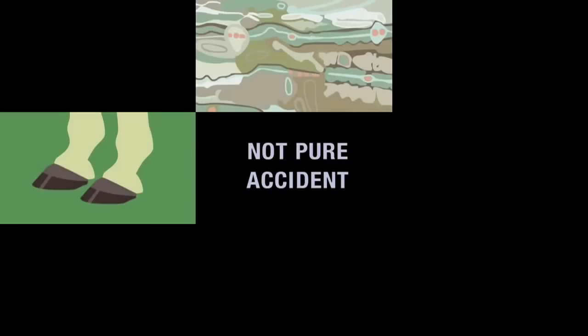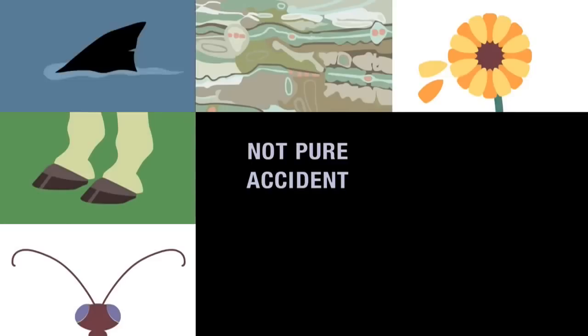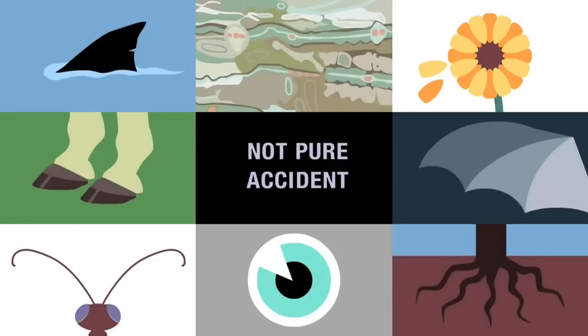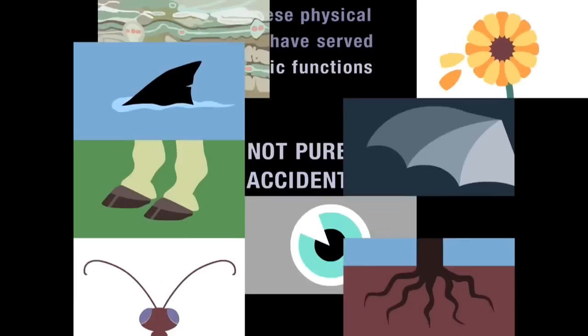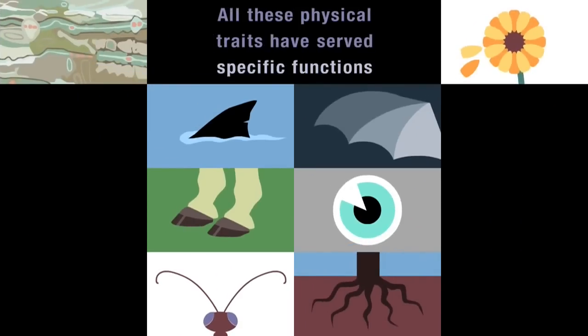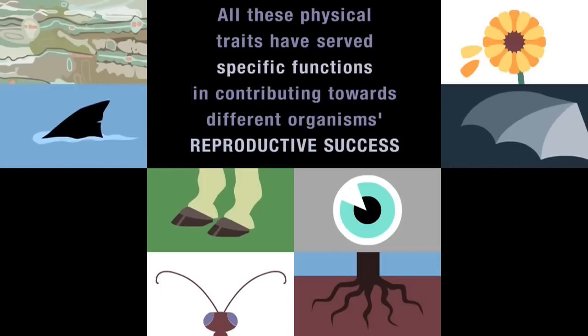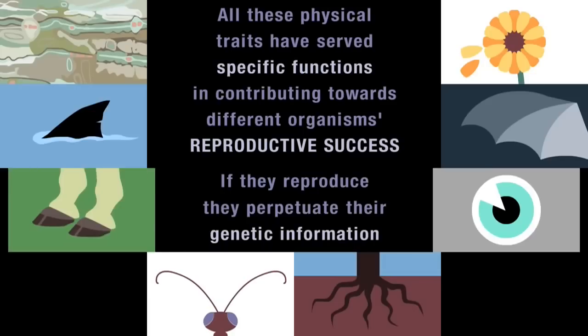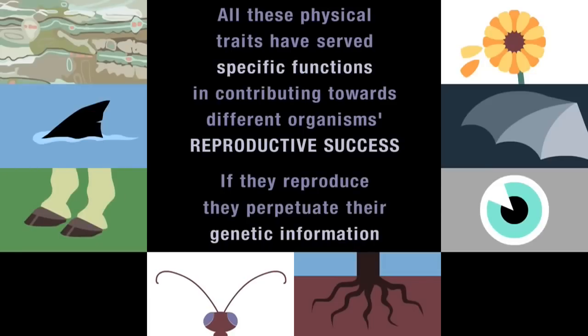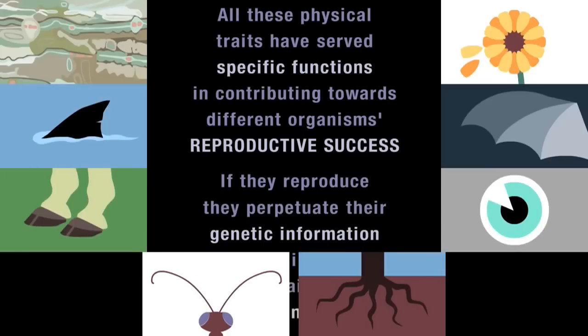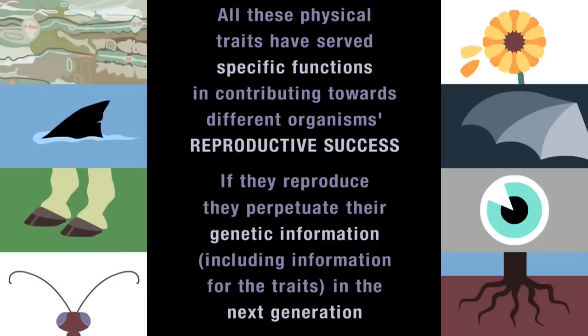Many who don't understand evolution try to discredit it by equating it with pure accident. But it's not pure accident that camouflage, hooves, petals, antennae, fins, wings, eyes, and roots have evolved in the natural world. All these physical traits have served specific functions in contributing towards different organisms' reproductive success. And clearly, if the organisms that exhibit these traits manage to reproduce, they perpetuate their genetic information, including the information for the traits, in the next generation.